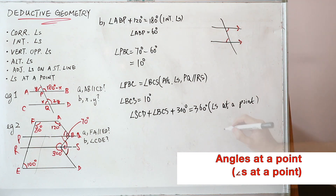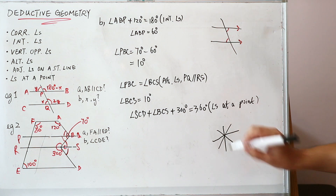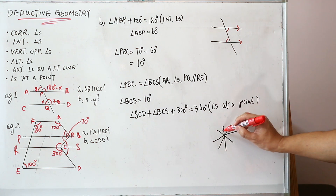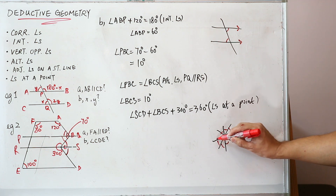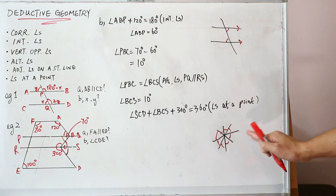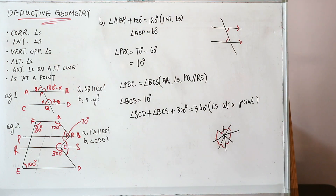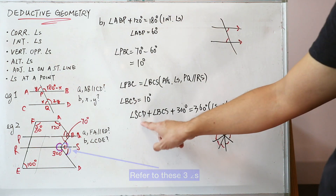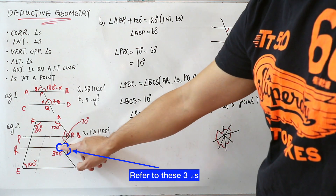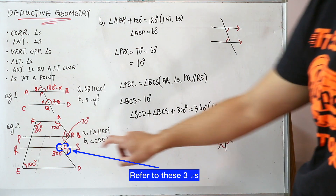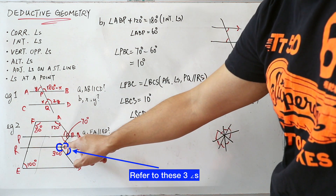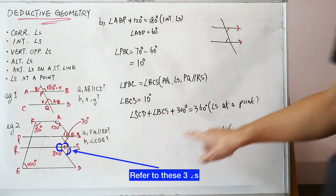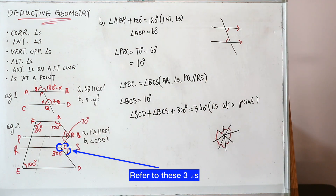Angles at a point means that when you have multiple lines meeting at a point, all the angles around that point add up to 360 degrees. So angle SCD plus angle BCS plus 300 degrees equals 360 degrees.